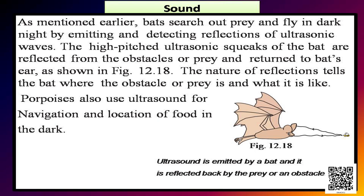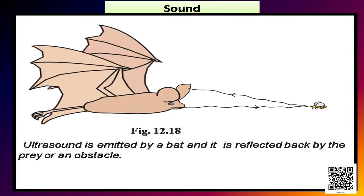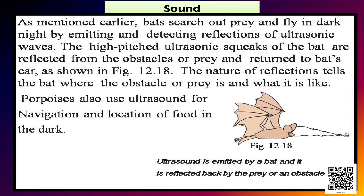As mentioned earlier, bats search out prey and fly in dark night by emitting and detecting reflections of ultrasonic waves. The high pitched ultrasonic squeaks of the bat are reflected from the obstacles or prey and return to bat's ear as it is shown in figure 12.18. The nature of reflections tells the bat where the obstacle or prey is and what is it like. Porpoises also use ultrasound for navigation and location of food in the dark.